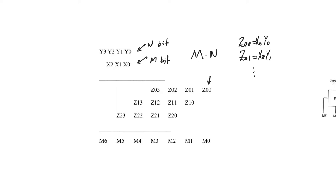The partial products are obtained the same way described in the last video. Each row is a summand — we have m summands, each n bits long. The length of each summand is determined by the multiplicand, and the number of summands is determined by the multiplier operand. What remains is to add up the partial products to produce the product, symbol m, numbered from m0 to m6. The product has seven bits — the sum of the word lengths of the multiplier and multiplicand.